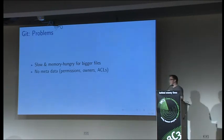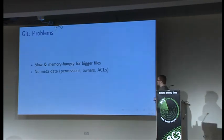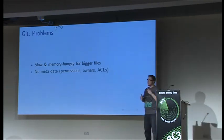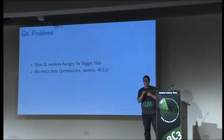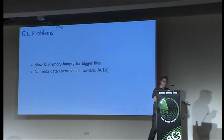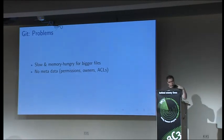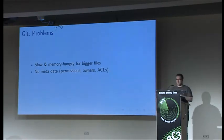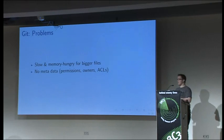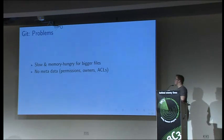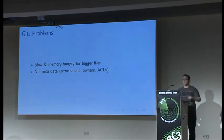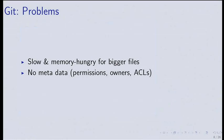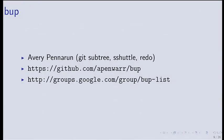Second, Git doesn't store metadata. It stores the executable flag and symlinks, but nothing else — no permissions, no owners, no groups, no ACLs. Nothing. That brings us to BAP.